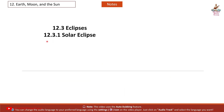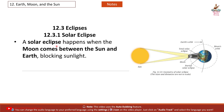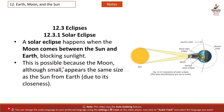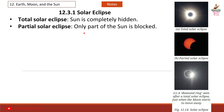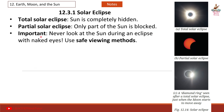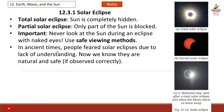12.3 Eclipses. 12.3.1 Solar Eclipse. A solar eclipse happens when the moon comes between the sun and Earth, blocking sunlight. The moon, although small, appears the same size as the sun from Earth due to its closeness. Total solar eclipse: the sun is completely hidden. Partial solar eclipse: only part of the sun is blocked. Important: never look at the sun during an eclipse with naked eyes — use safe viewing methods. In ancient times, people feared solar eclipses due to lack of understanding. Now we know they are natural and safe if observed correctly.